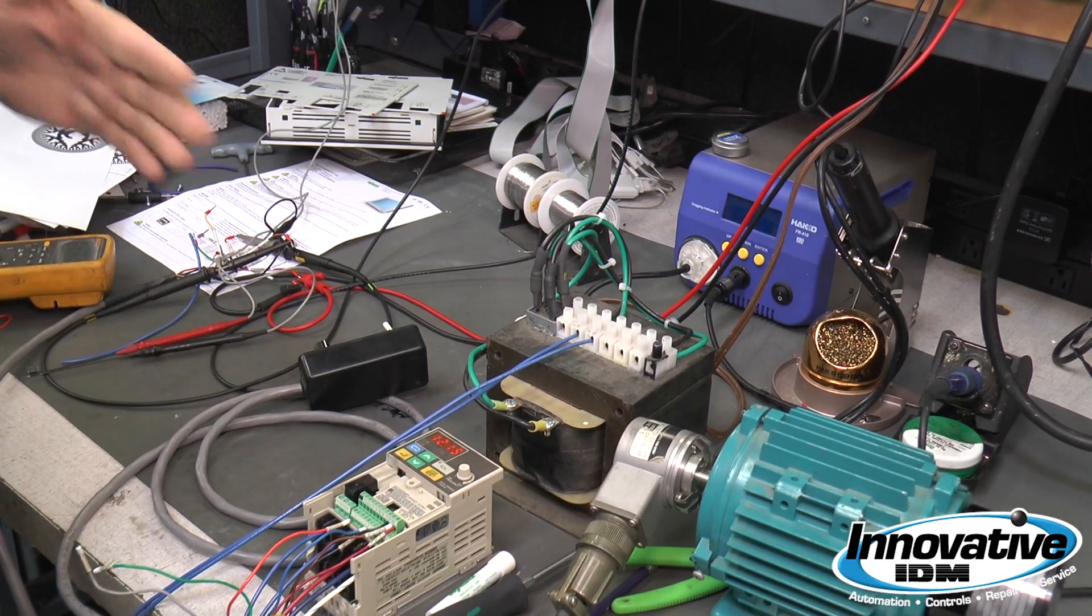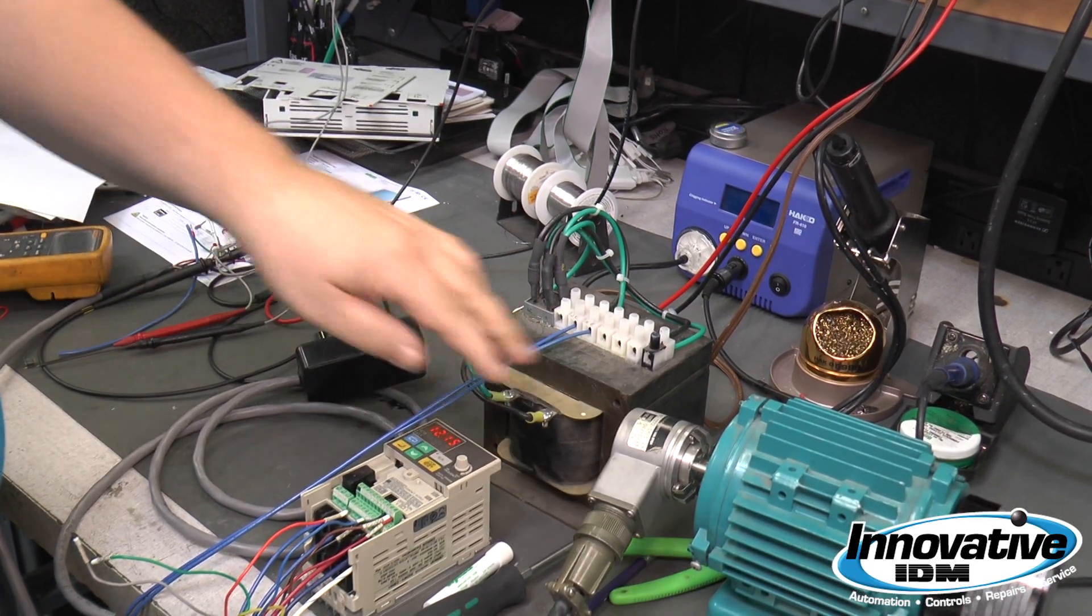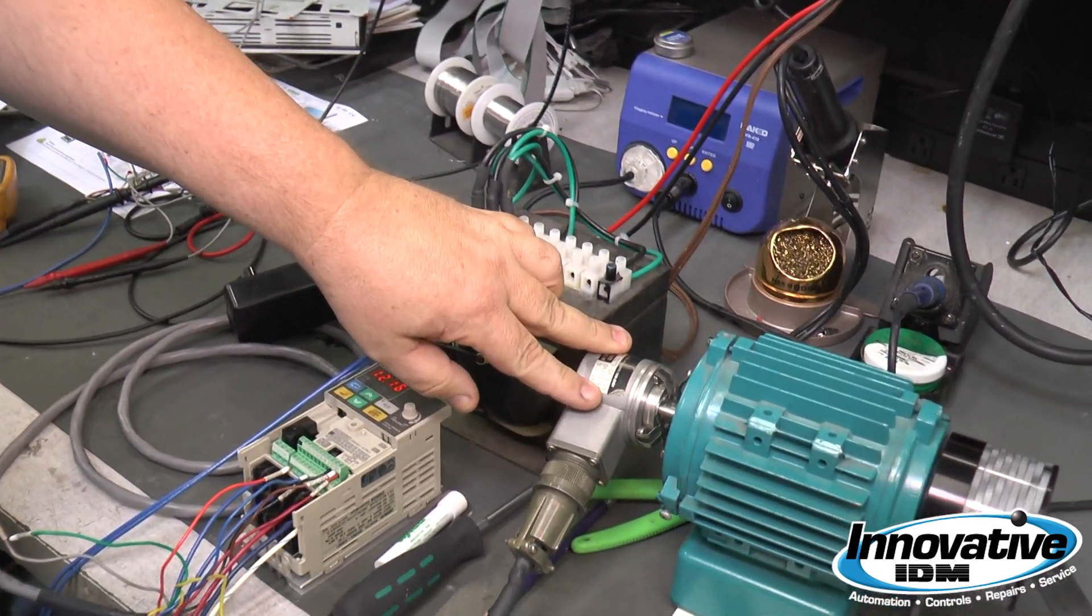There's a couple of different types of encoders. You have the rotary pulse encoder and you have absolute encoders.